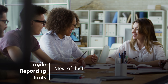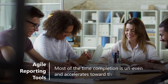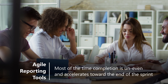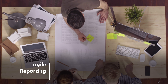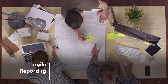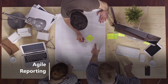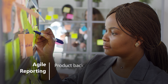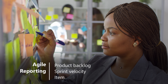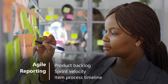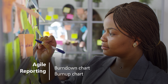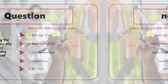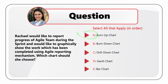Jumping to 75, which tells us that most of the time completion is uneven and accelerates toward the end of the sprint. There are several Agile reporting mechanisms to show progress and share updates with stakeholders. They are product backlog, sprint velocity, item process timeline, burn-down chart, as well as the burn-up chart. So the correct answer is Choice A: Burn-up chart.